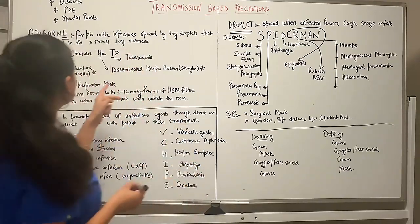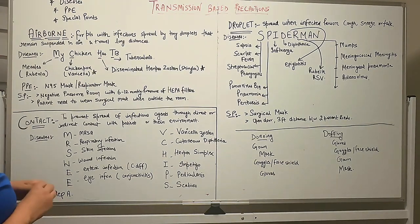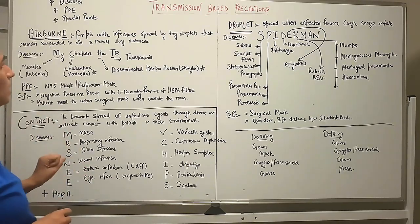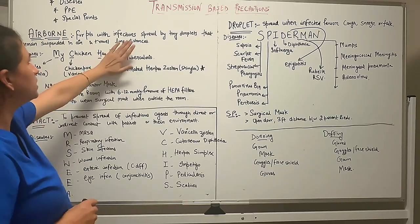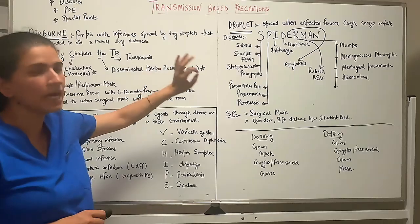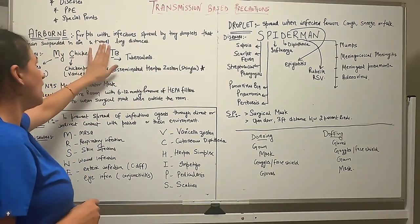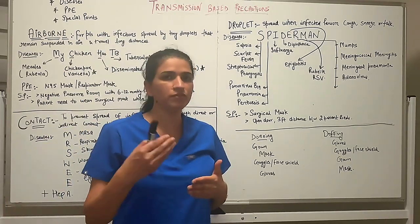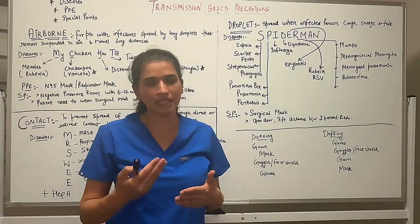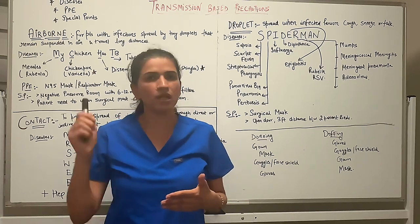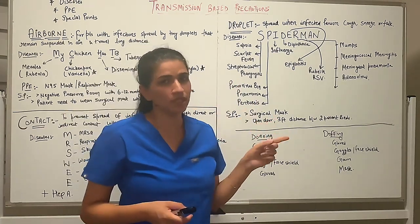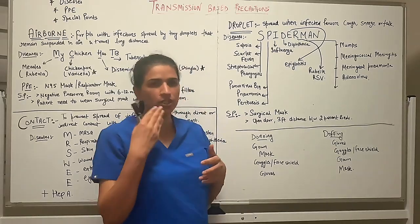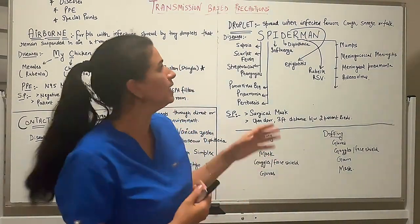Airborne precautions are for patients infected with airborne conditions. In airborne transmission, infection spreads by tiny droplets that remain suspended in the air and travel long distances. When somebody inhales in the same environment as an infected person, they can easily get the same droplet nuclei through inhalation. This is mainly when someone coughs, sneezes, or talks.